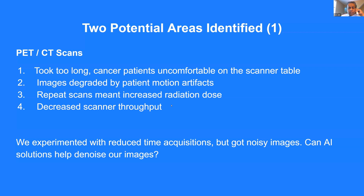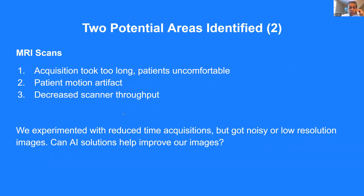All of this would decrease the throughput of the scanner. At my institution, we use the same scanner to do outpatient CT scans, so if PET CTs are taking a long time, we can do fewer outpatient CT scans. We had experimented with reduced time acquisitions, but we found that the images were very noisy. We were excited to see that Subtle AI offers an opportunity to solve this problem. The same thing with MRI scans — acquisition took very long, patients became uncomfortable, there was motion artifact and decreased scanner throughput. We had tried to reduce the time of acquisition, but the images were either too noisy or had low resolution. We were excited to see Subtle's AI products for MRI.